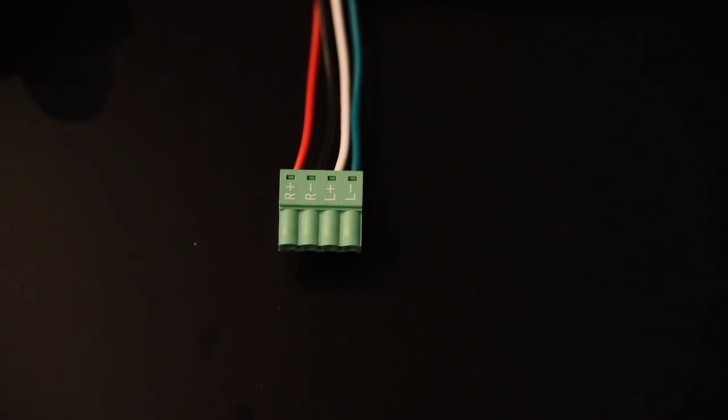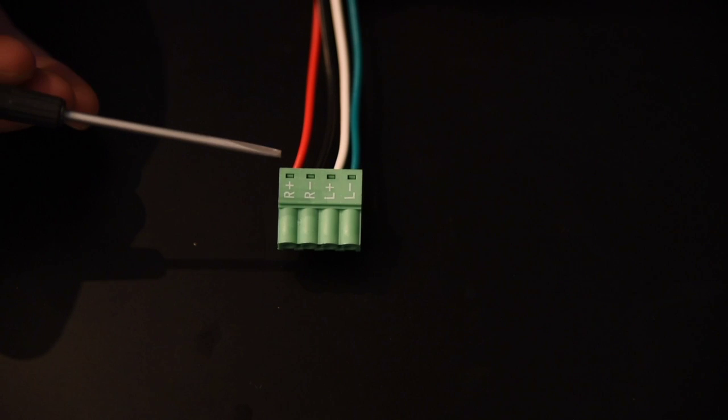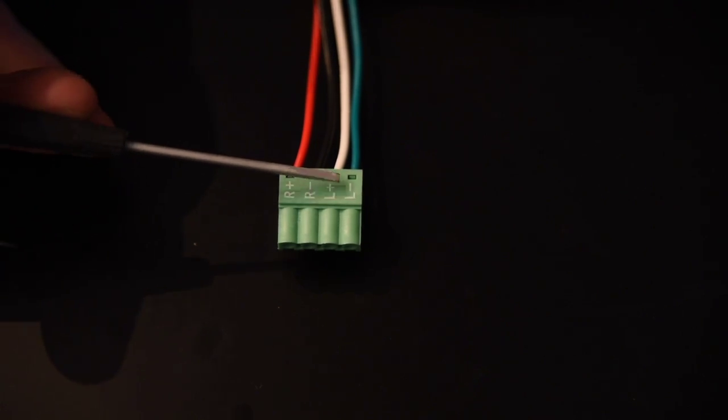Now if you have two sets of two conductor cable, it's just going to be red, black, red, black, and just label on the cable which one is right and which one is left.